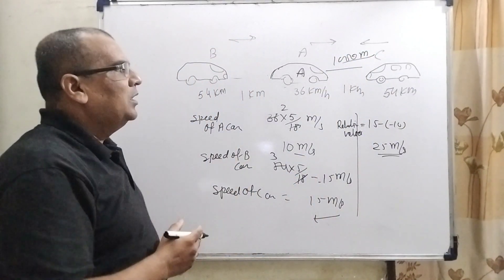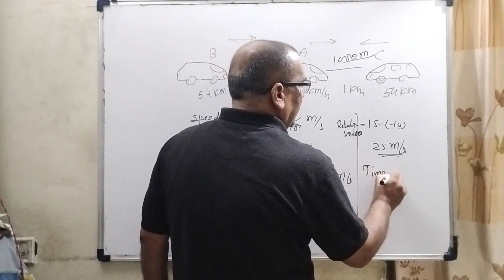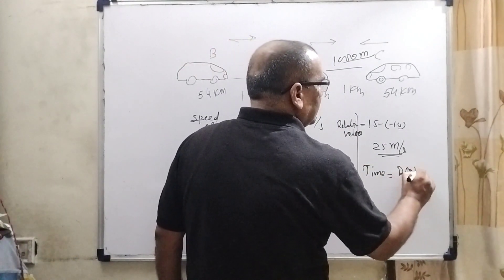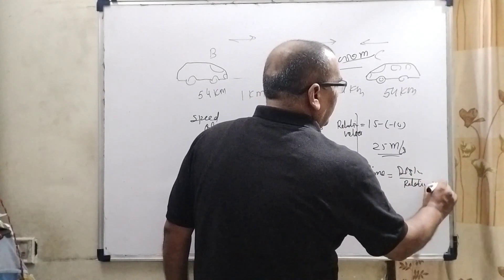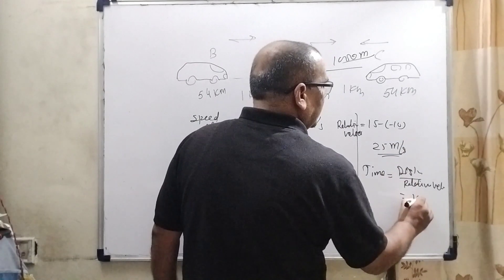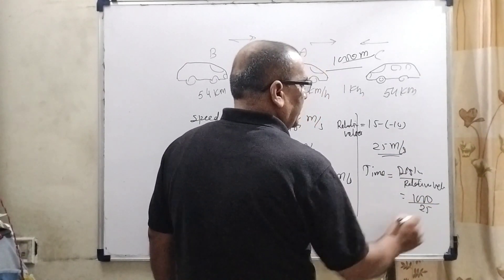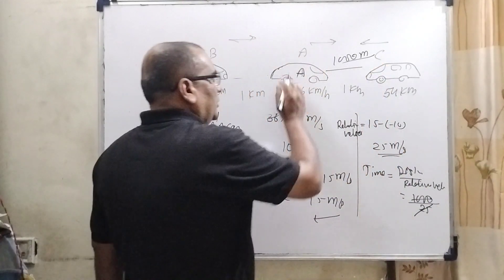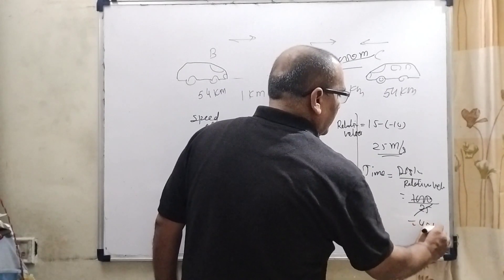So, here we have to find out the time. Time is distance upon relative velocity. What is the distance? That is 1000 meter and relative velocity is 25. So, here to cross this, C to A needs 40 seconds.